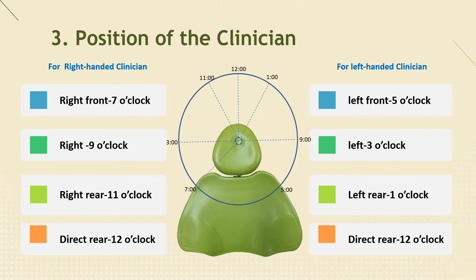8. Thighs — full body weight distributed evenly on seat, with about 3 inches between the edge of the seat and the back of the knee. 9. Knees — slightly apart. 10. Feet — flat on the floor. For front-to-side positions: the clinician sits facing the patient; both legs are placed side by side towards the patient's head. The clinician must be able to see directly into the patient's mouth, including the labial and lingual surfaces of the maxillary and mandibular anterior regions. This position is suitable for the side closest to the clinician.